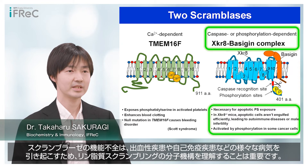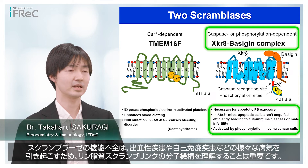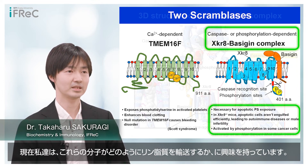Since the deficiency of scramblase leads to various diseases like bleeding disorder or autoimmunity, it is important to understand the molecular mechanism underlying phospholipid scrambling. And now, we are interested in how these molecules transport phospholipids.